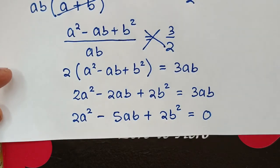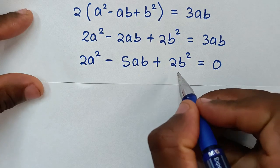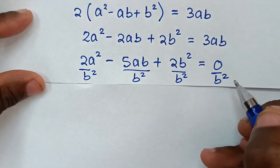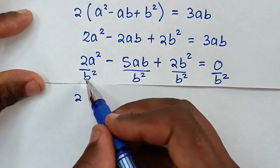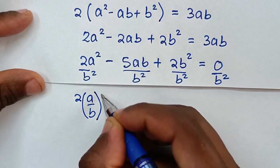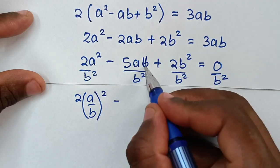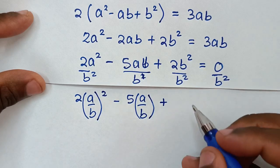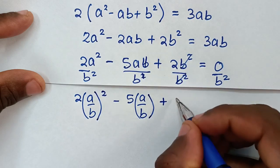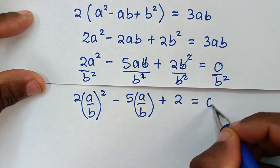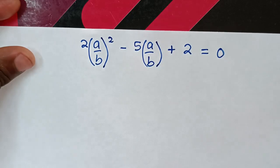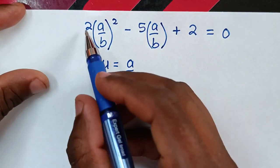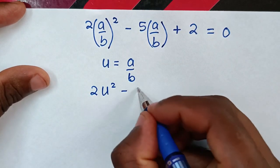In the next step, we divide both sides by b^2. This gives 2(a/b)^2 - 5(a/b) + 2 = 0. We let u = a/b, so the equation becomes 2u^2 - 5u + 2 = 0.